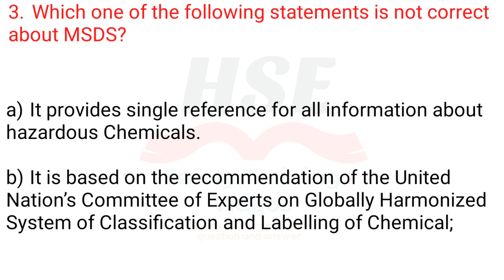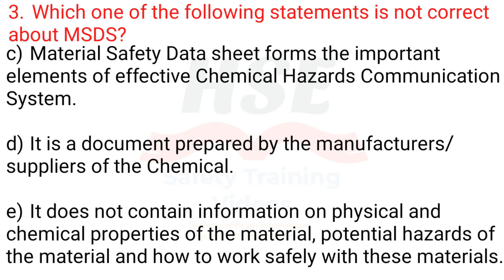Question 3: Which one of the following statements is not correct about MSDS? A. It provides single reference for all information about hazardous chemicals. B. It is based on the recommendation of the United Nations Committee of Experts on Globally Harmonized System of Classification and Labeling of Chemicals. C. Material Safety Data Sheet forms the important elements of effective chemical hazards communication. D. It is a document prepared by the manufacturers and suppliers of the chemical. E. It does not contain information on physical and chemical properties of the material, potential hazards of the material, and how to work safely with these materials.